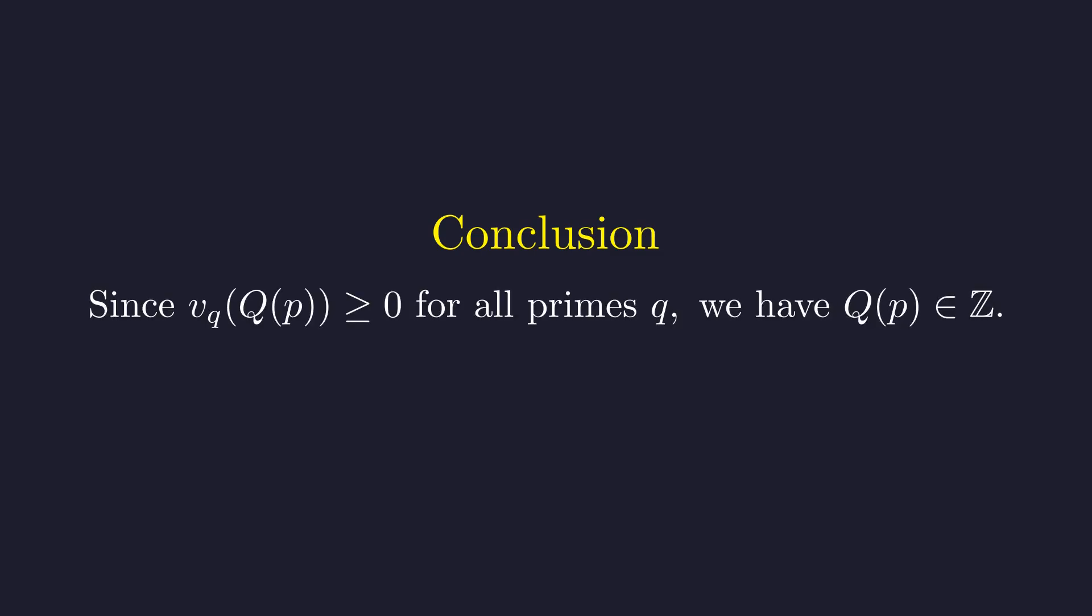Let's step back and admire what we've built. We've shown that every prime has non-negative valuation in Q(p). For primes smaller than p, we proved this with our intricate inequality argument. For primes p or larger, they simply don't appear in any of the factors, so their valuation is automatically 0.